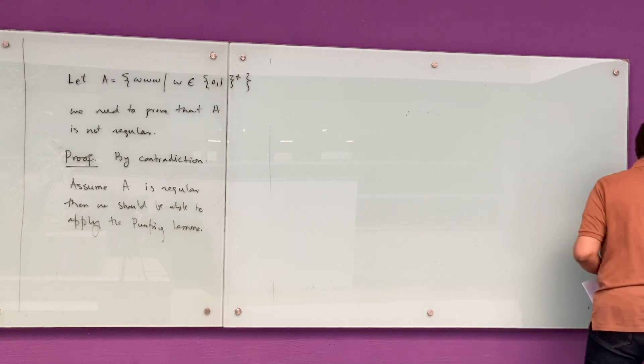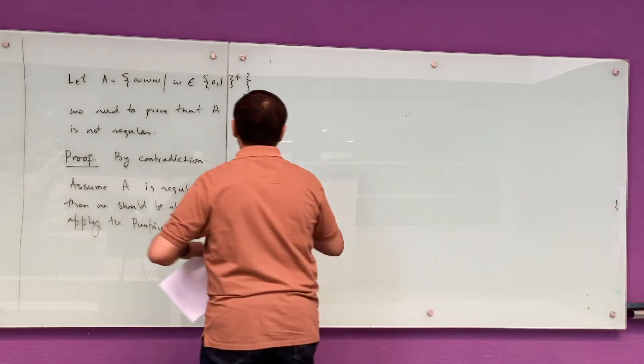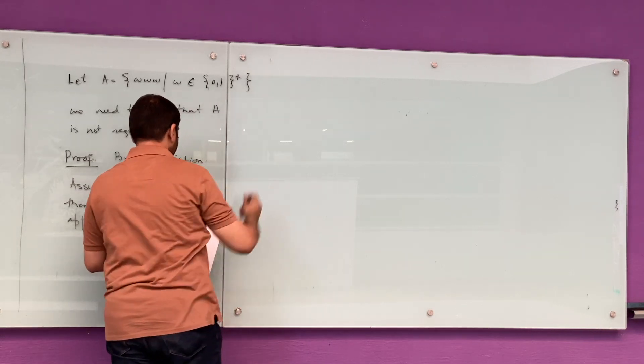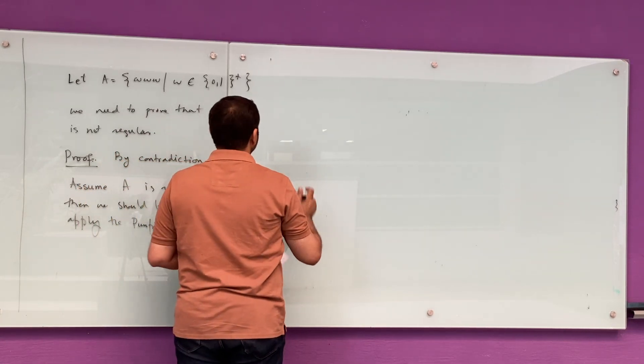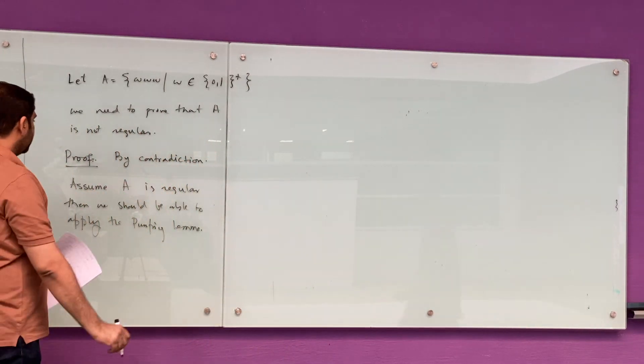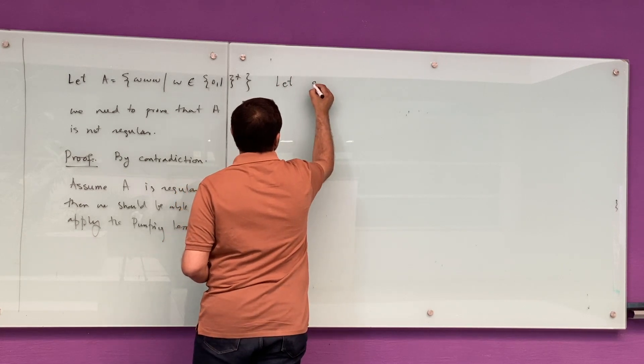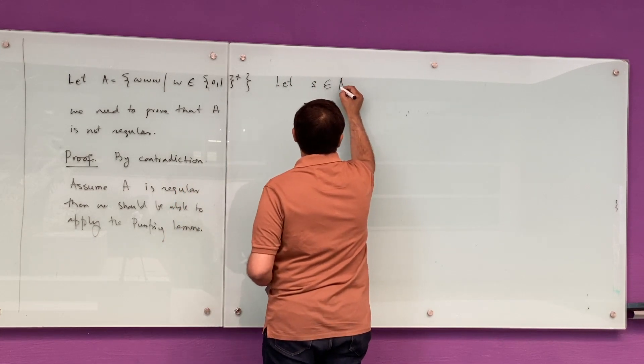If this is the case, then we should be able to apply the pumping lemma on it. Because A seems sufficiently large enough, we should be able to apply pumping lemma. We'll try to apply pumping lemma, and if we cannot apply it, that would create a contradiction, which means that A is not regular.